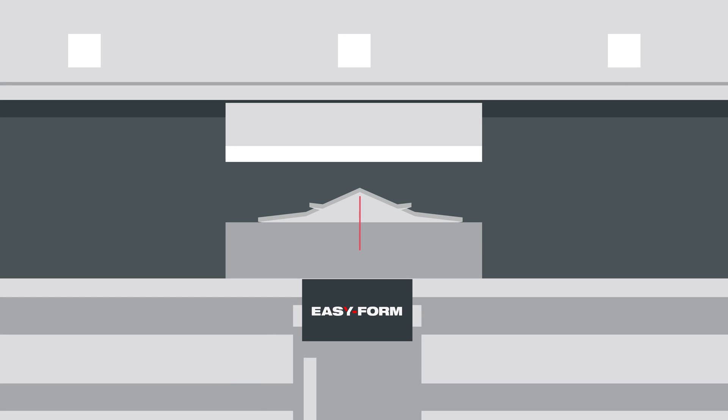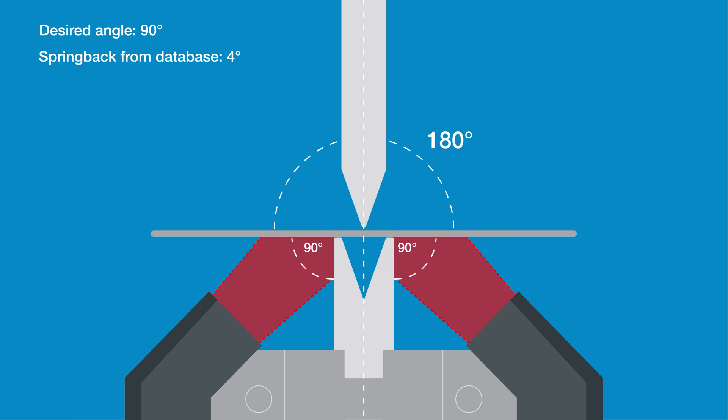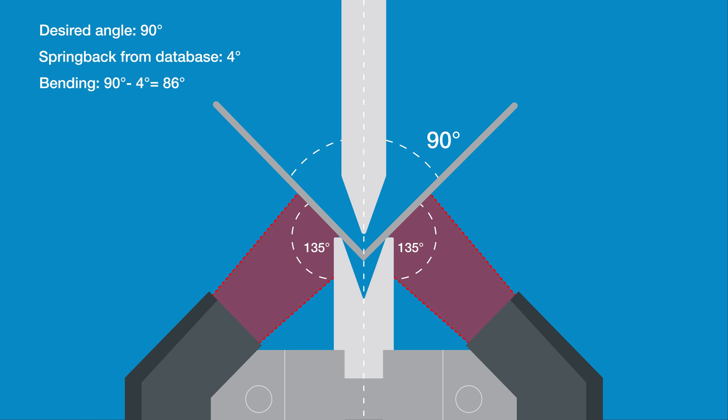Using the die as a reference point, it continuously checks and corrects the angle of the sheet as it is being bent.